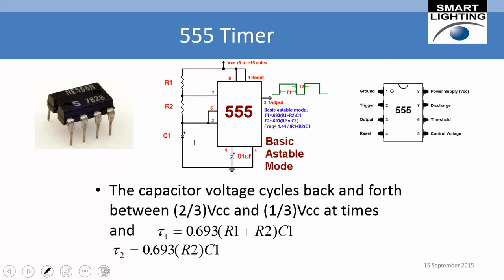Combining the two time constants gives the total period. The charging time constant involves R1 plus R2, and the discharging time constant involves R2 only. Note that the frequency formula should have a factor of 2 in front of R2 — there is a small error in the diagram shown, which will be corrected in the proper formula.